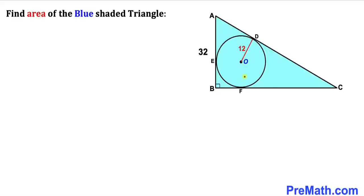Welcome to PreMath. In this video we have a circle inscribed in a right triangle ABC, such that the radius of this circle is 12 units whereas the side length of this right triangle is 32 units. We are going to calculate the area of this blue shaded triangle ABC.